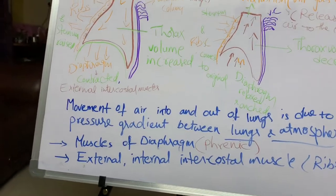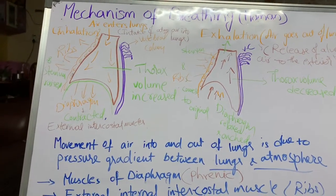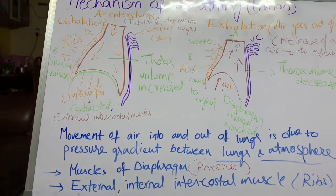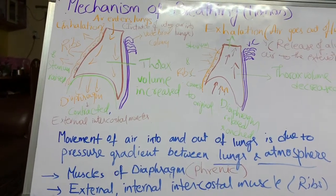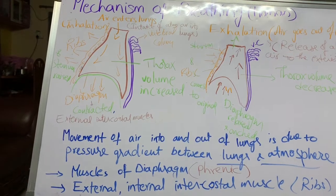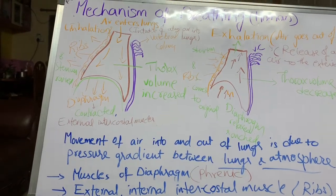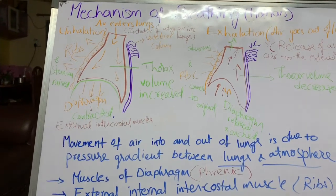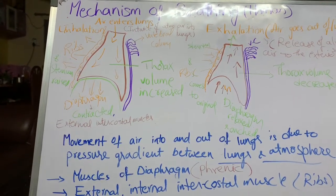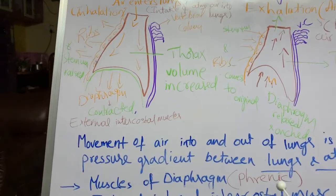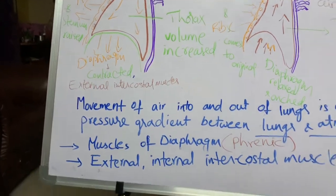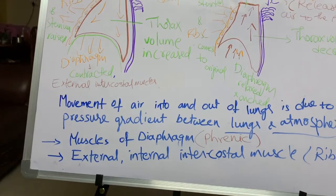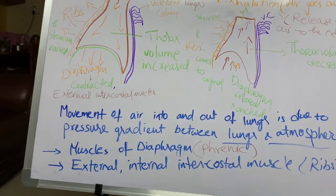This is about the breathing mechanism in human beings. The key point to remember is that air moves from higher pressure to lower pressure. To increase or decrease pulmonary pressure, two important muscles are involved: the phrenic muscles and the external intercostal muscles. This concludes the topic of breathing in human beings.